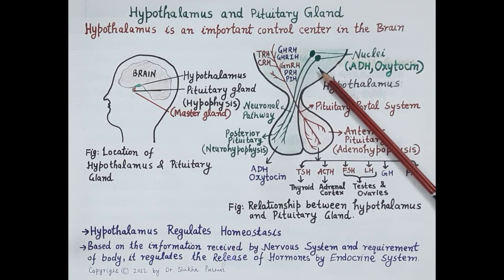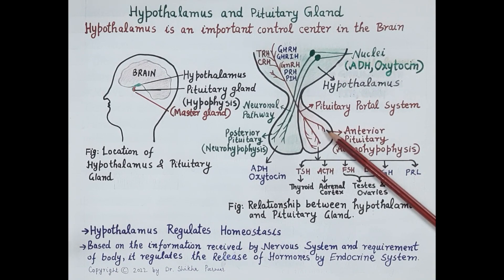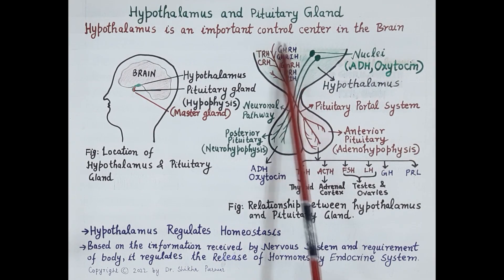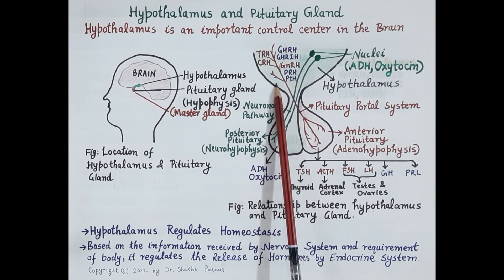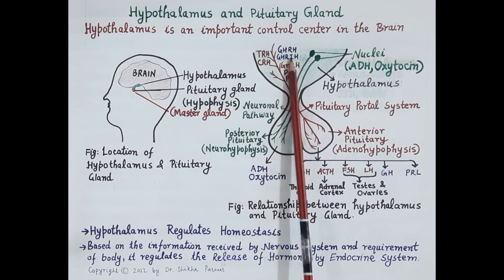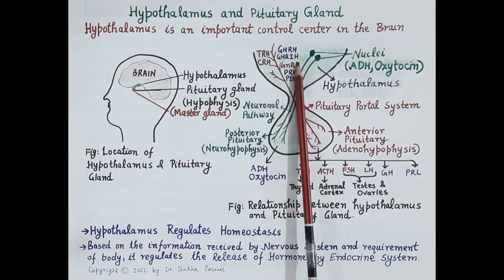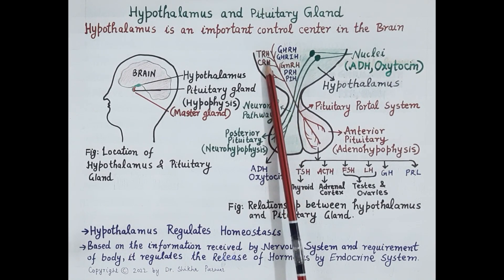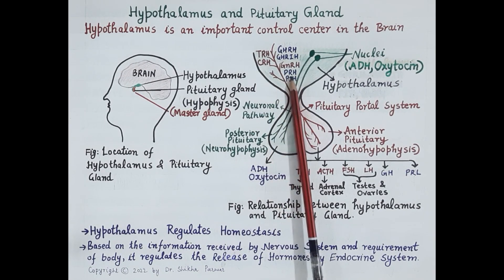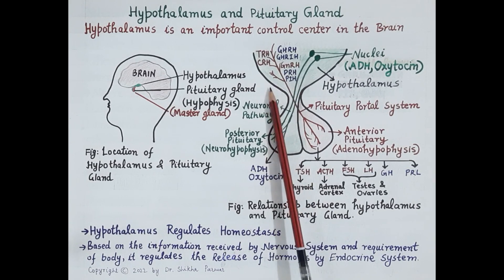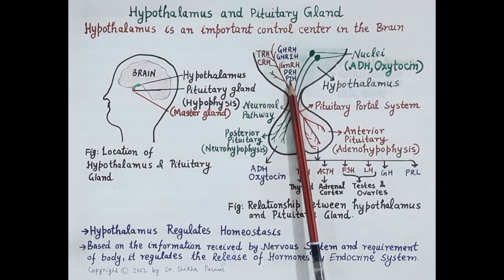Now let's discuss how hypothalamus regulates functioning of anterior pituitary. In addition to antidiuretic hormone and oxytocin, hypothalamus also produces regulatory hormones. These are stimulatory as well as inhibitory hormones, namely: GHRH (growth hormone releasing hormone), GHRIH (growth hormone release inhibiting hormone), TRH (thyrotropin releasing hormone), PRH (prolactin releasing hormone), PIH (prolactin inhibiting hormone), and GnRH (gonadotropin releasing hormone). These are the regulatory hormones synthesized in the hypothalamus.